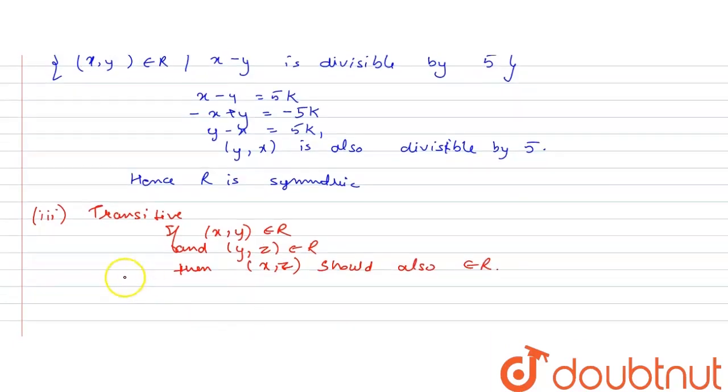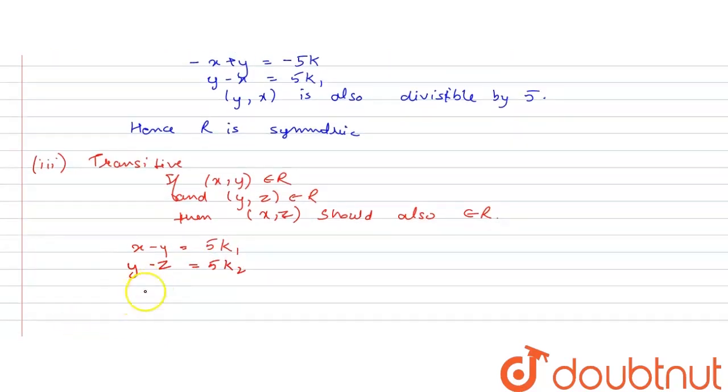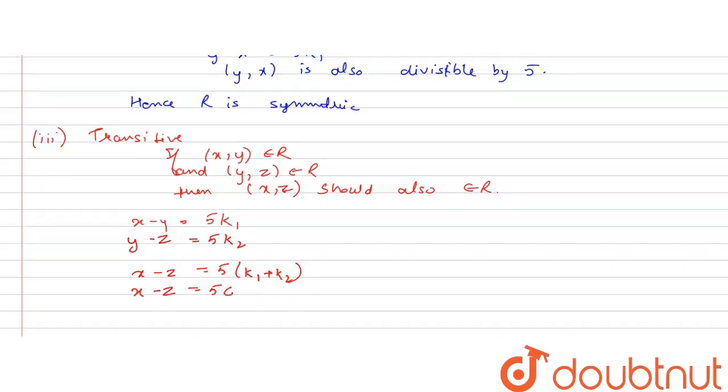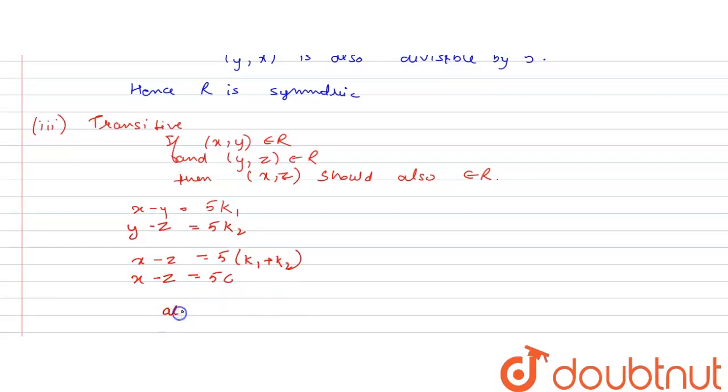So, if (x,y) belongs to R, then x minus y equals 5k₁. If (y,z) belongs to R, then y minus z equals 5k₂. If we add both these equations, what do we get? That x minus z equals 5(k₁ + k₂). That is, 5 times any constant, let us say c. So, (x,z) also belongs to R. Hence, R is transitive.